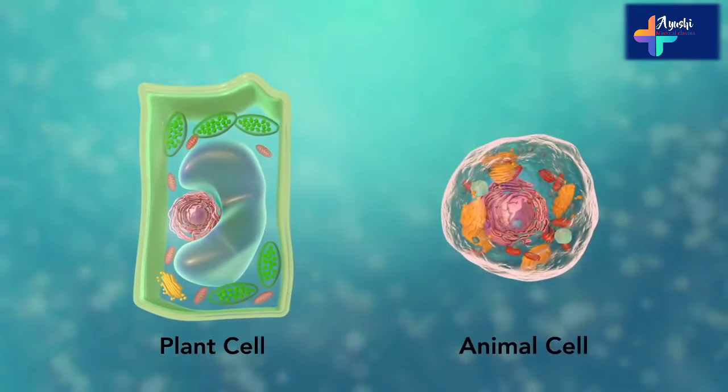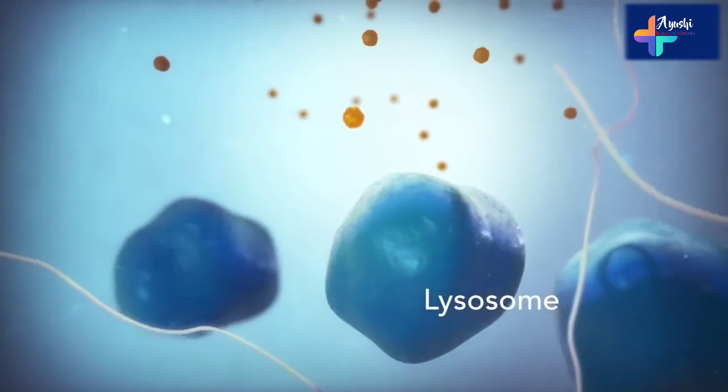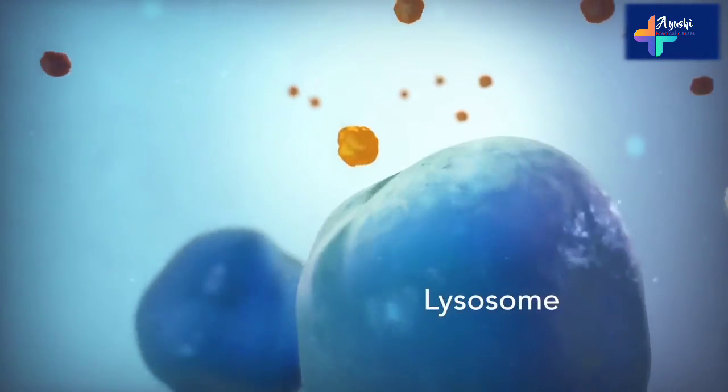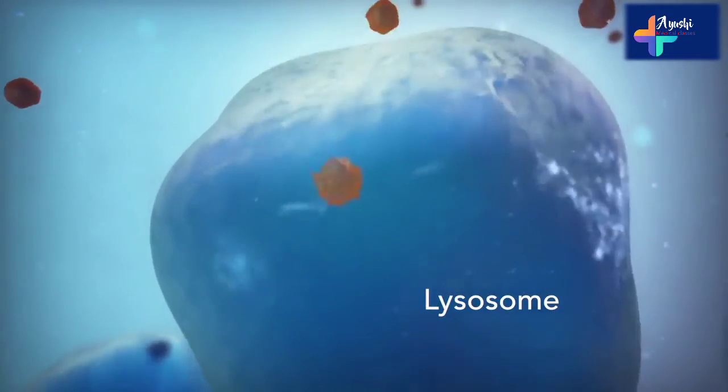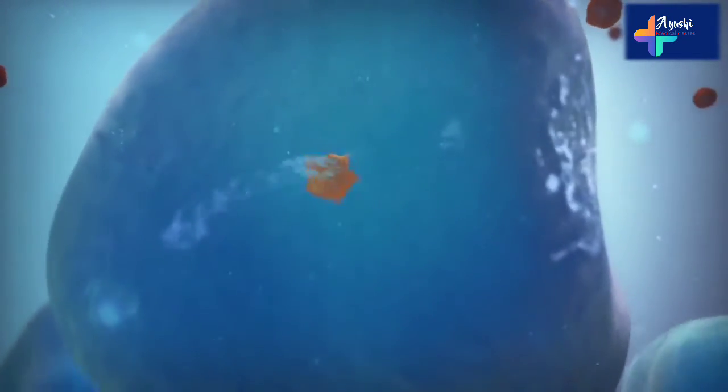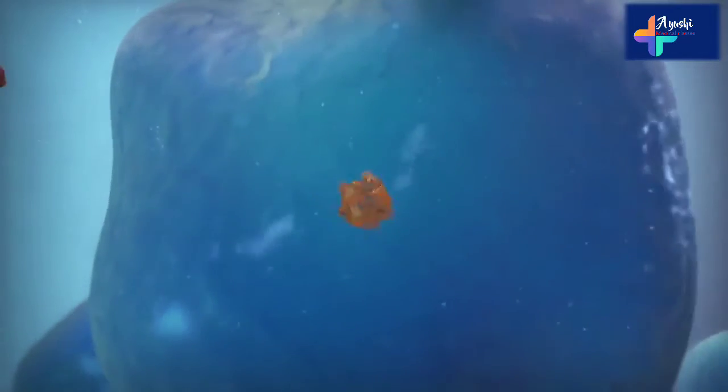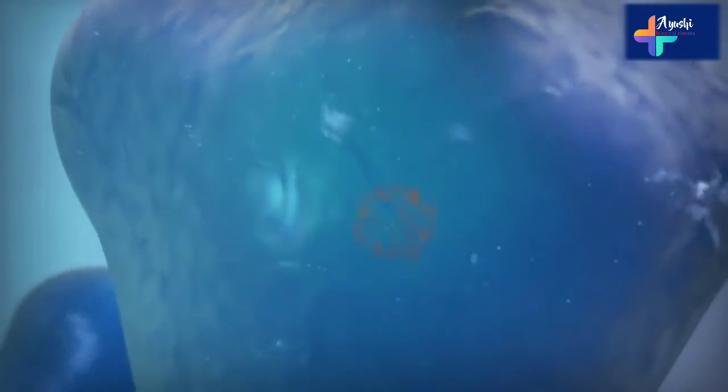Going back to the animal cell, you will see an organelle called a lysosome. Lysosomes are the garbage collectors that take in damaged or worn-out cell parts. They are filled with enzymes that break down this cellular debris.